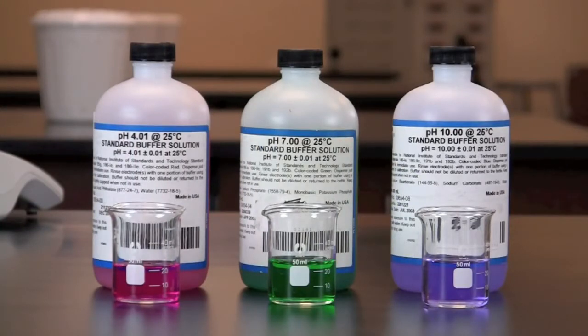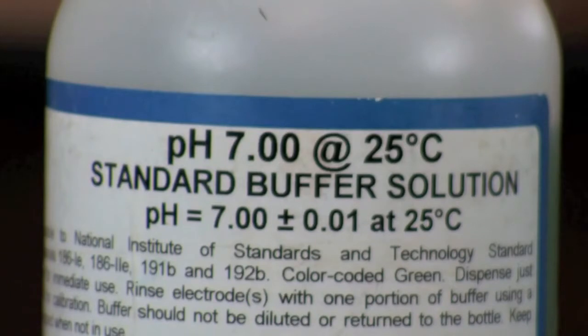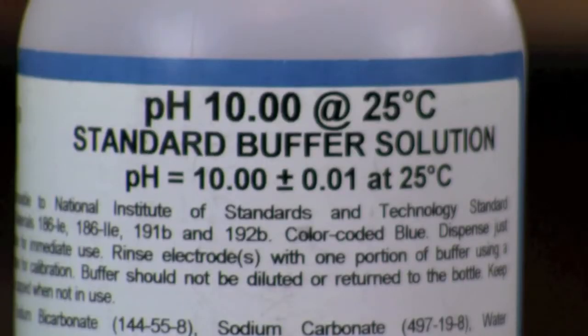Prior to use, a pH meter should be calibrated using color coded buffers of fixed pH. pH 4, 7, and 10 are standard.